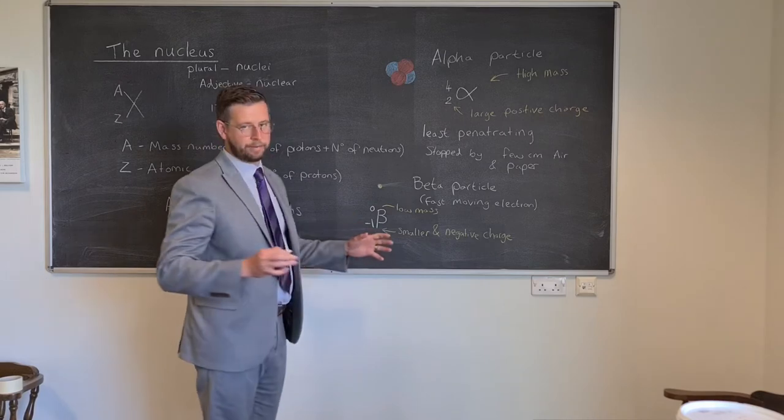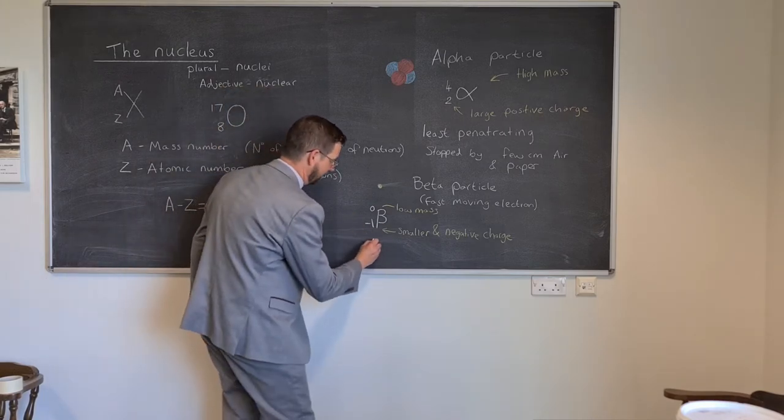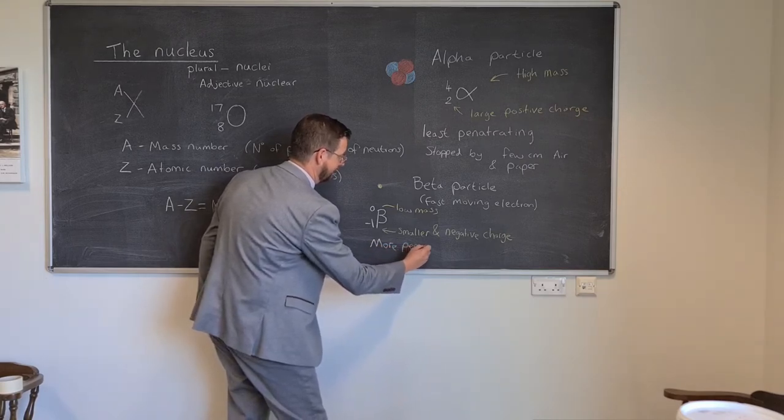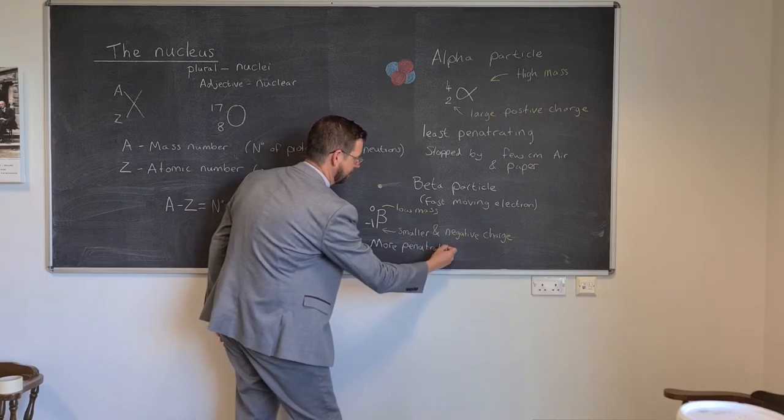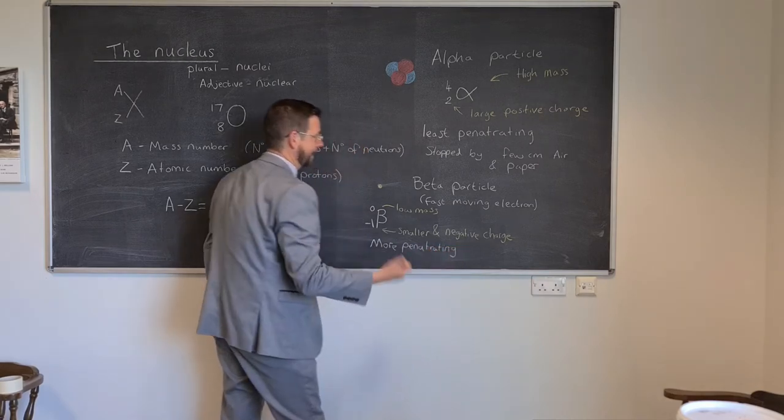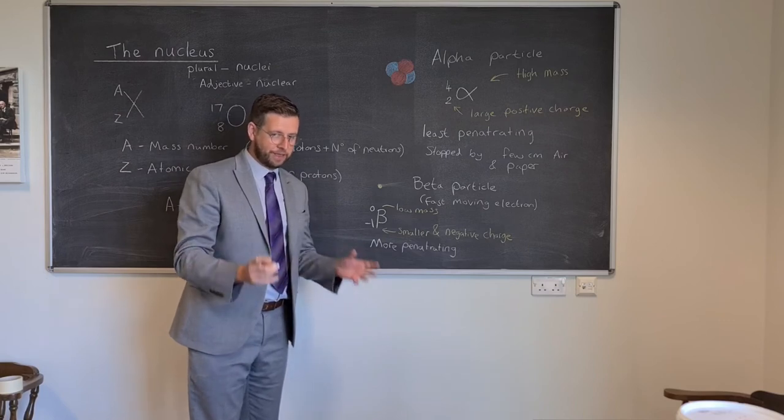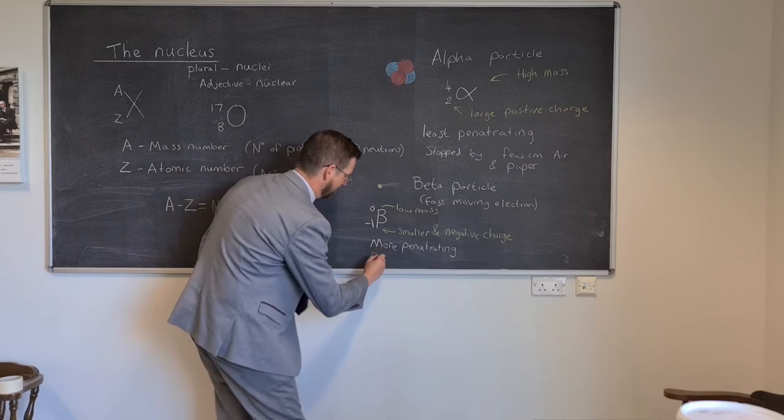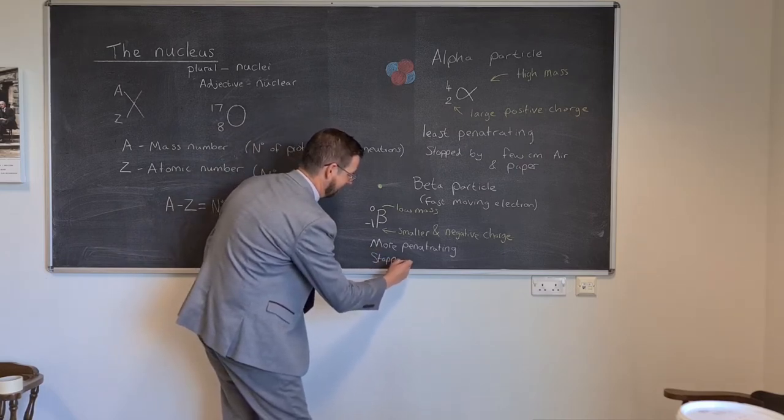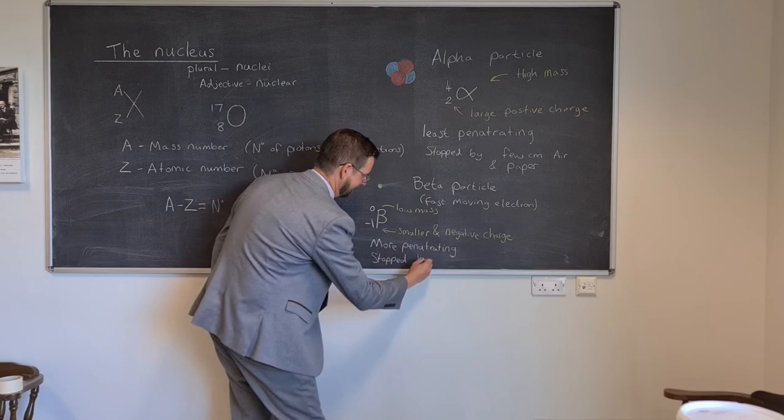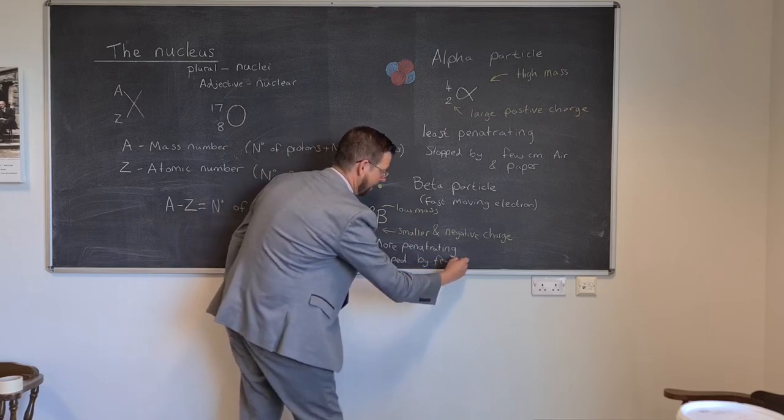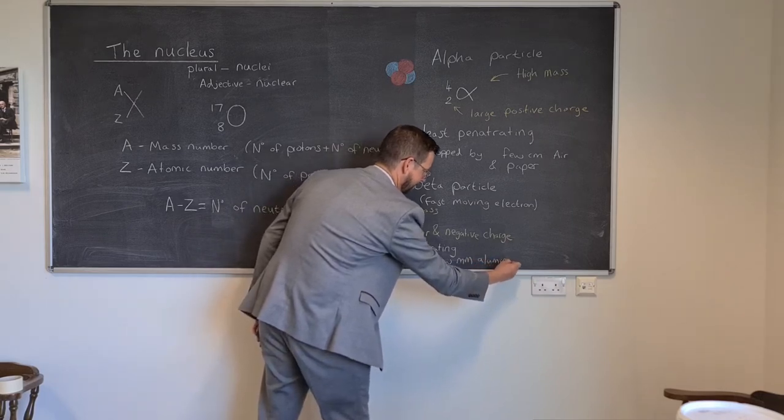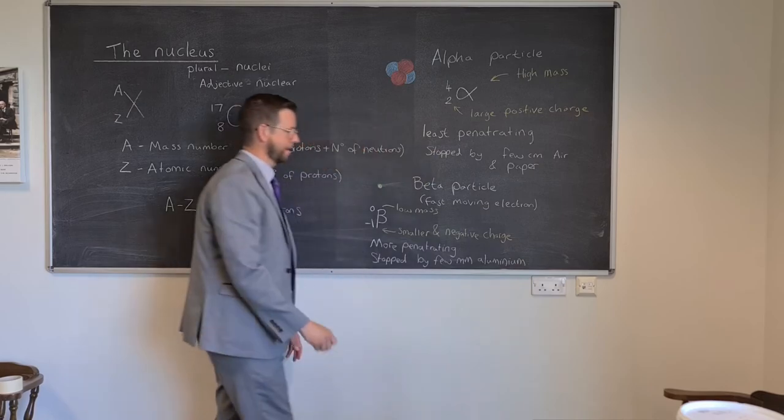So how would I describe the penetrative properties of the beta particle? Well, compared to the alpha, they are definitely more penetrating. It has stronger penetrative powers. It is not stopped by the air. It is not stopped by paper. But it is stopped by aluminium and anything thicker, including lead. So stopped by a few millimetres of aluminium.